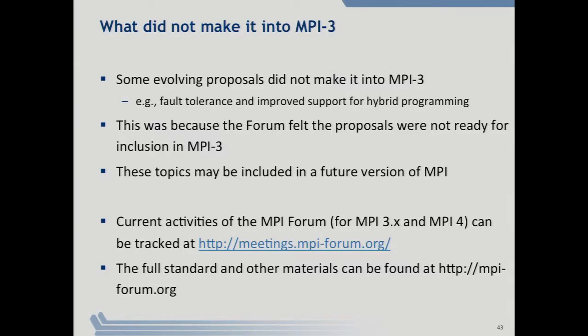There was also a group looking at better support for hybrid programming. In particular, a proposal to extend MPI to have multiple communication endpoints per rank — right now, an MPI process has a single rank shared by all threads, leading to a single receive queue and thread serialization. The proposal was to give each thread its own endpoint for sending and receiving. That work is still ongoing and may appear in the next major MPI release.